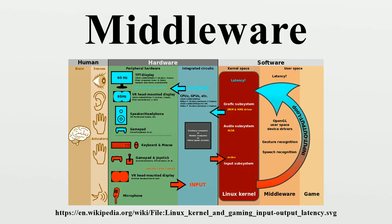While core kernel functionality can only be provided by the operating system itself, some functionality previously provided by separately sold middleware is now integrated in operating systems. A typical example is the TCP/IP stack for telecommunications, nowadays included in virtually every operating system. At the other end of the scale, the boundary between middleware and application has also moved. Digital TV middleware, for example, usually provides enough functionality so that no application is needed for end users to use TV services. Middleware gained popularity in the 1980s as a solution to the problem of how to link newer applications to older legacy systems, although the term had been in use since 1968. It also facilitated distributed processing — the connection of multiple applications to create a larger application, usually over a network.